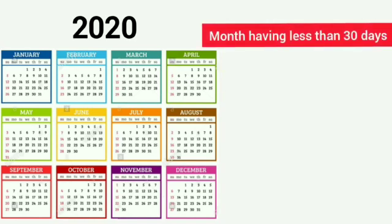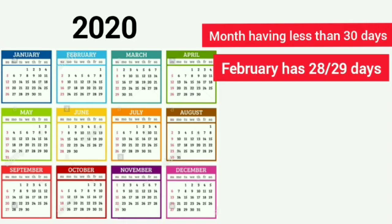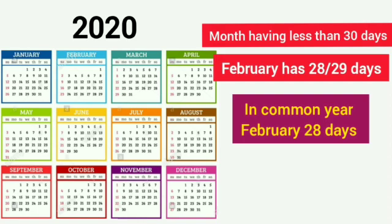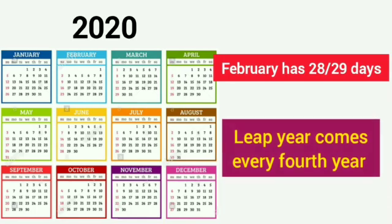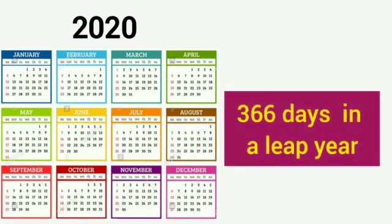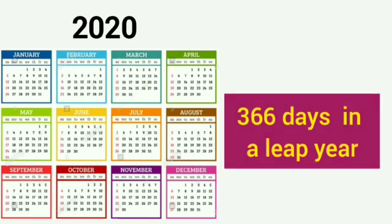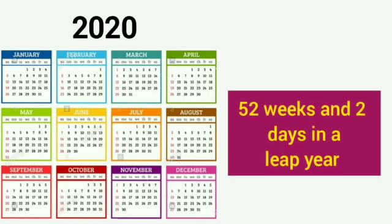Now, see the month which has less than 30 days. February has 28 days or 29 days. In a common year, February has 28 days, and in a leap year, February has 29 days. Leap year comes every 4th year. So, in a common year there are 365 days, and in a leap year there are 366 days. There are 52 weeks in a common year and 52 weeks and 2 days in a leap year.